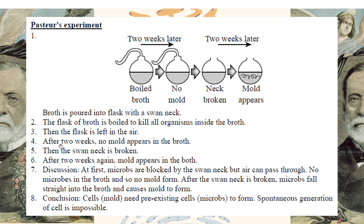In Pasteur's experiment, it's like this: here's some broth, and the broth has microbes there. If you just leave it, mold will grow. So he did one thing — he poured the broth inside a flask, and the flask has a swan neck. Only air can pass through; the microbes and living things can't pass through. The flask of broth was first boiled to kill all the organisms inside. Then the flask was left in the air, and after two weeks, no mold appeared in the broth. Air can pass through, but the microorganisms can't pass through, so no microorganism inside, so no mold — no other microorganism can grow there.